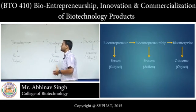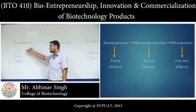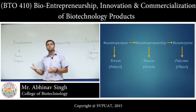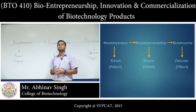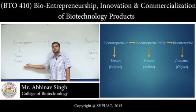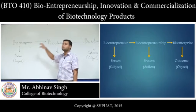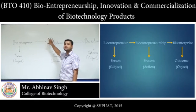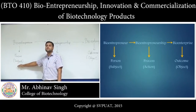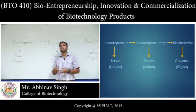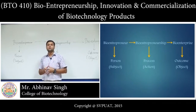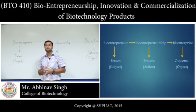This diagram tells us that the bioentrepreneur is a person — he himself or a group of people might be involved in setting up a bio enterprise. The person is basically called the subject, because he is responsible for both the upcoming processes: bioentrepreneurship as well as the setting up of the bio enterprise. He is involved in all kinds of activities — managerial practices, production practices, or looking after all problems associated with the establishment of these two things.